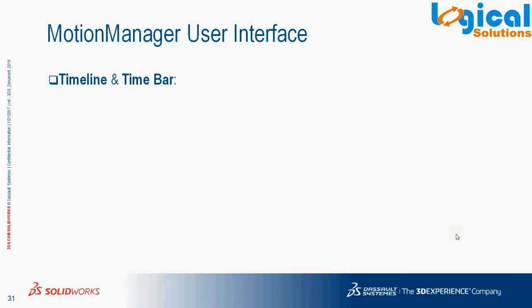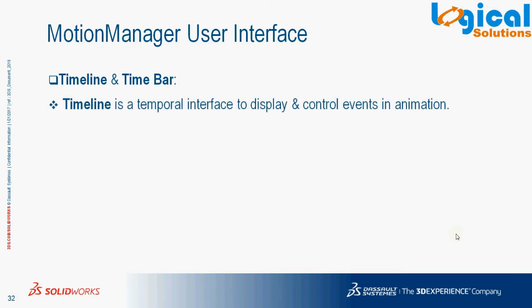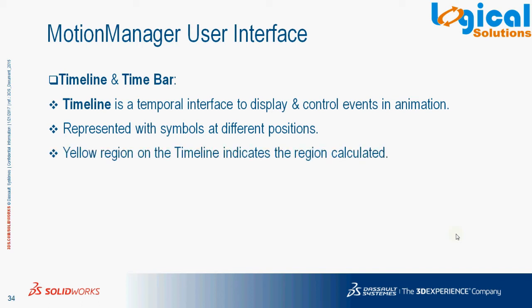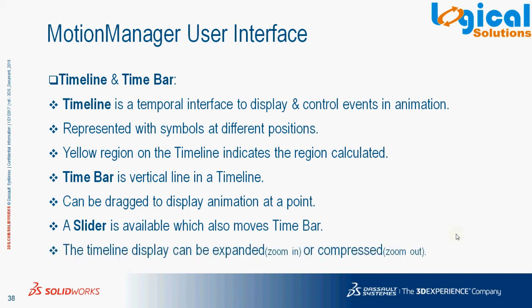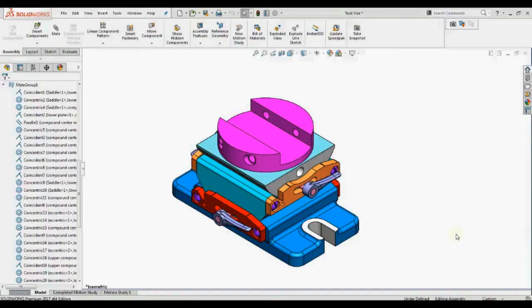The Timeline is a temporal interface used to display and control the sequence of events in an animation. Multiple symbols are used to represent these events at specific time intervals. The yellow highlighted region indicates the portion that is calculated. The Time Bar is a vertical line in the timeline that can be dragged to display the animation at any point in time. There is also a slider which moves the Time Bar by dragging, and the timeline display can be expanded or compressed using tools at the rightmost corner.